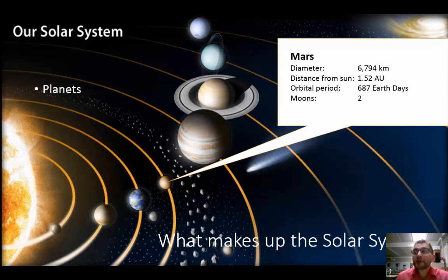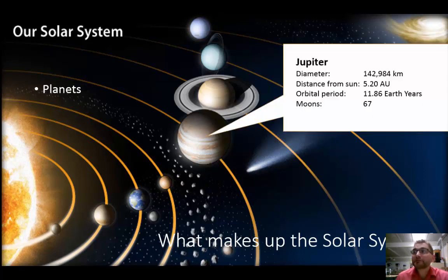The next farthest planet is Jupiter. Don't forget that between Mars and Jupiter is the asteroid belt. Jupiter is the largest of our planets. Jupiter has the largest number of moons with 67.